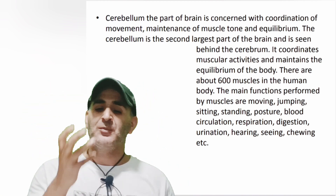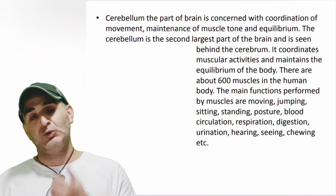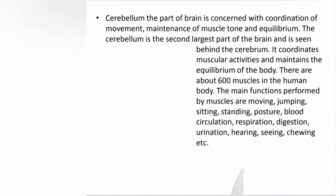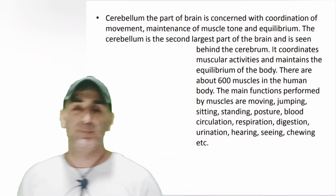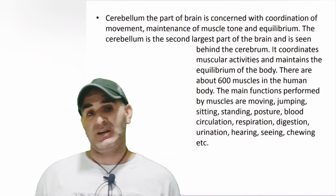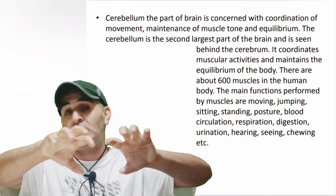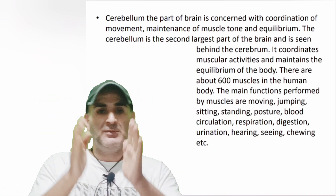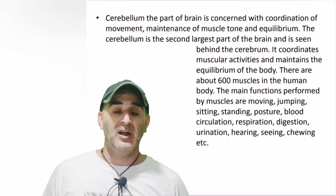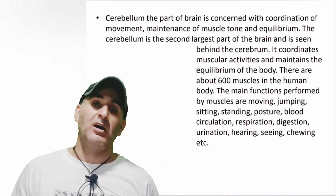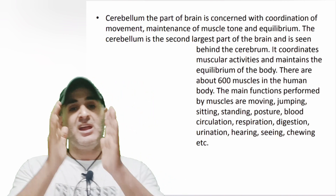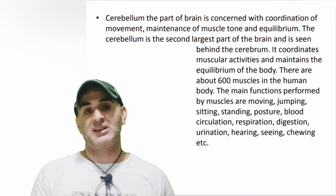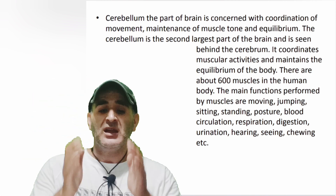The cerebellum coordinates the muscles and maintains the equilibrium in the body. Our body's equilibrium is basically dependent upon the cerebellum. If there is any defect in the cerebellum, a person will not be able to control their body's muscles — the body will not be able to maintain equilibrium. Without the proper functioning of the cerebellum, proper muscle coordination or control cannot occur.